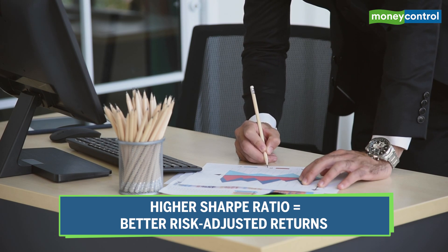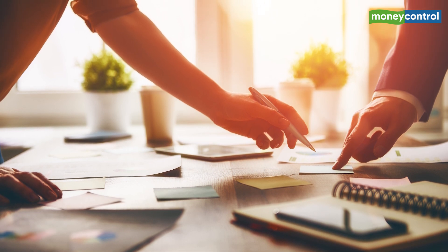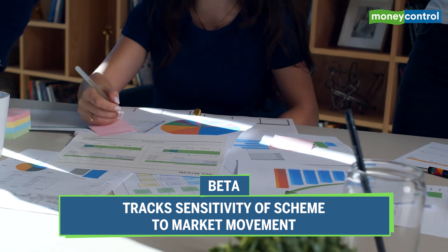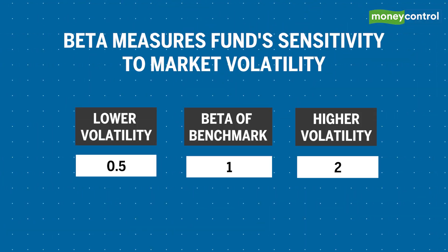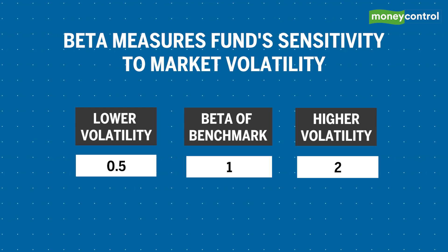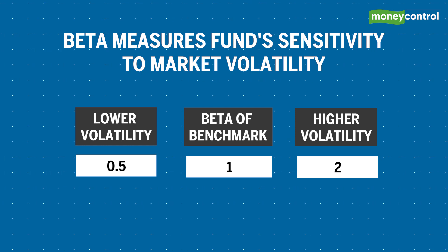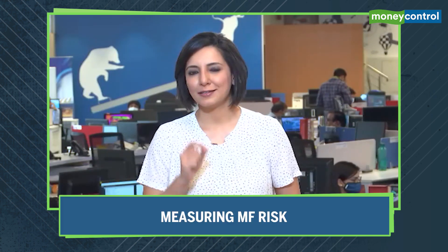Essentially, the higher the Sharpe ratio, the better the risk-adjusted return. Still savvier investors will also want to check the beta of any scheme. Beta tracks sensitivity to market movements — the beta of the market or benchmark is always taken as one. Any scheme with a beta less than one denotes lower volatility, and one with a beta higher than one denotes more volatility.